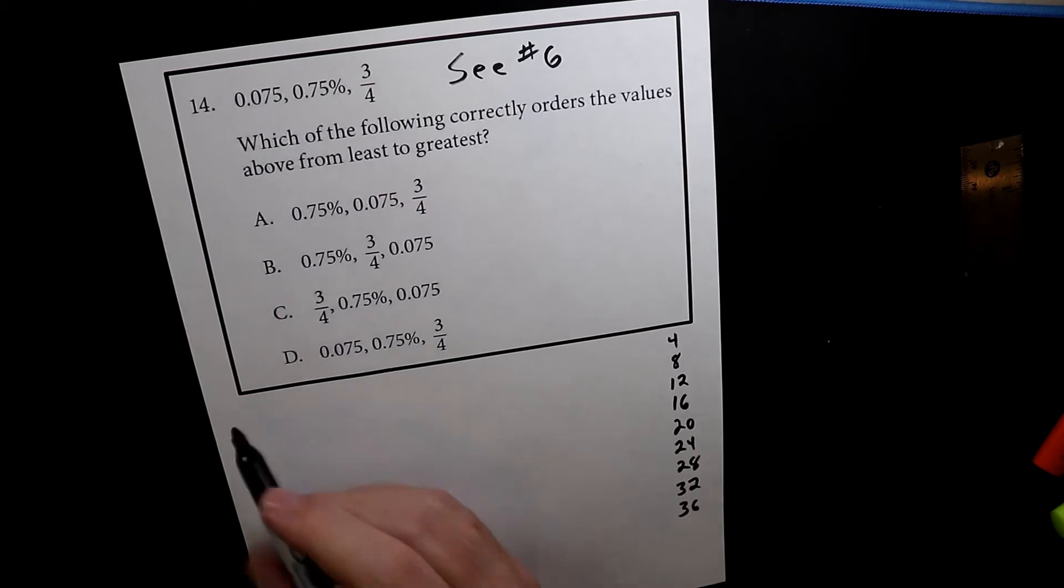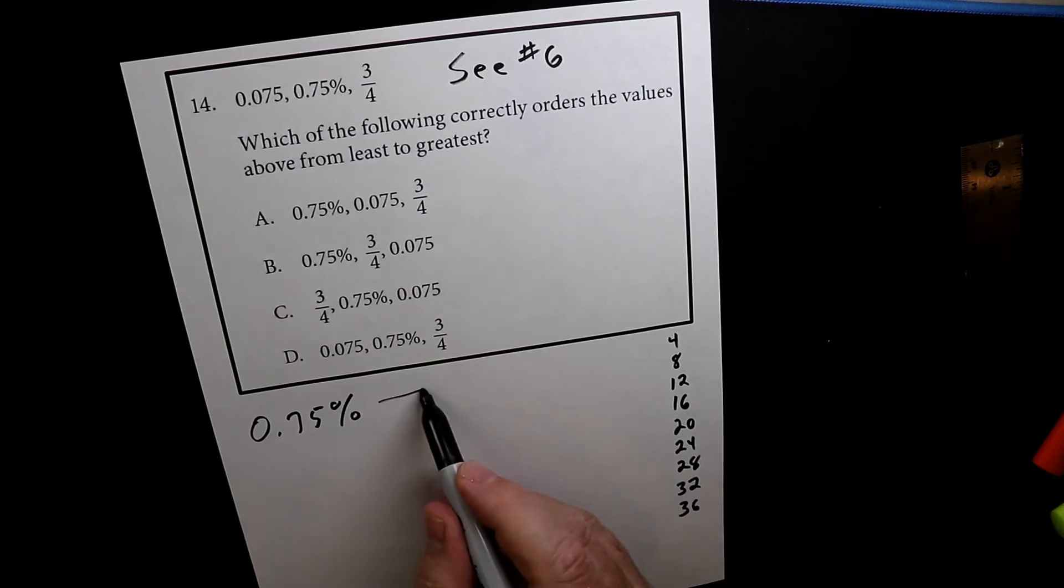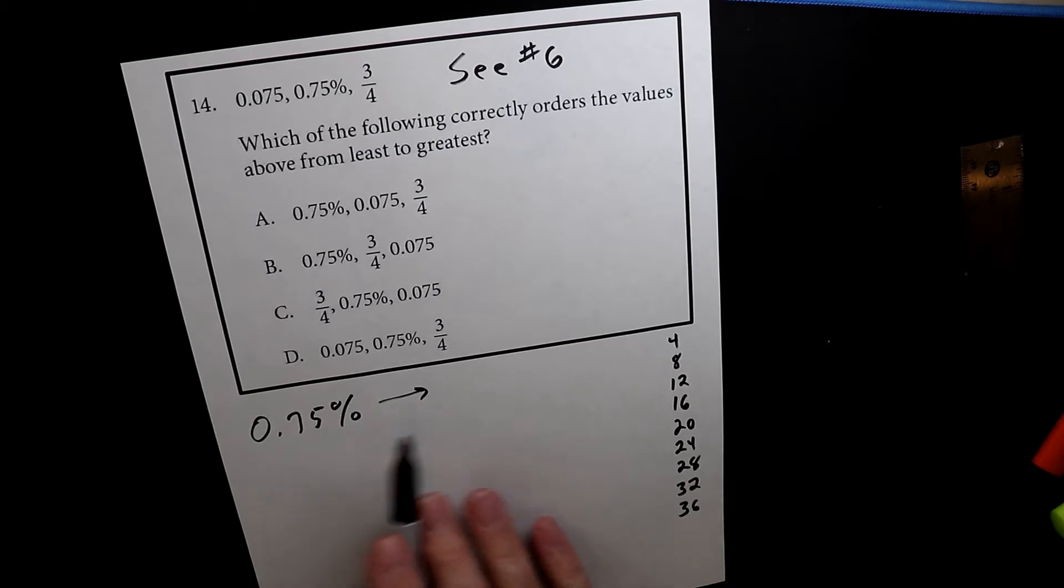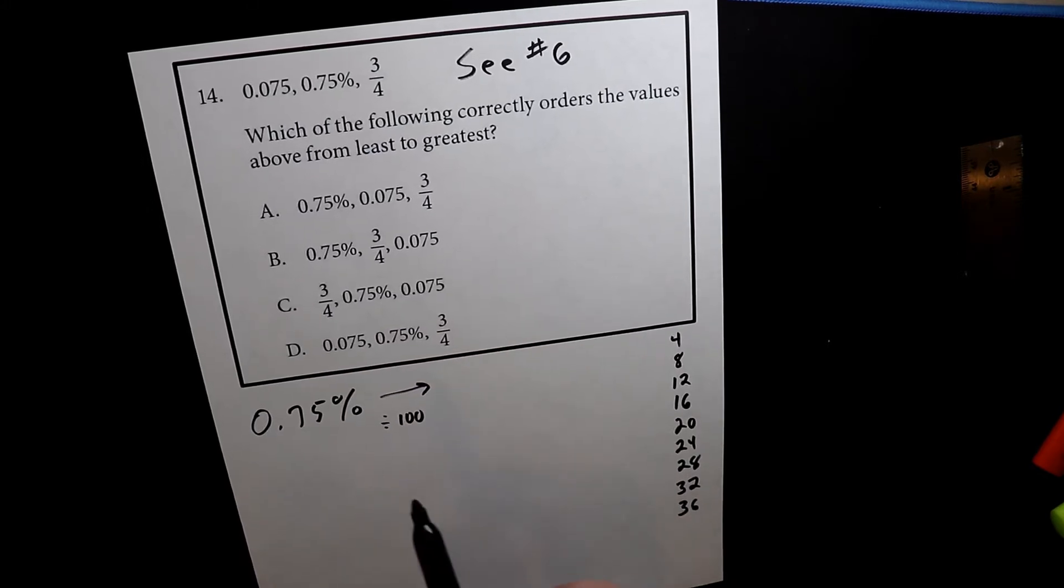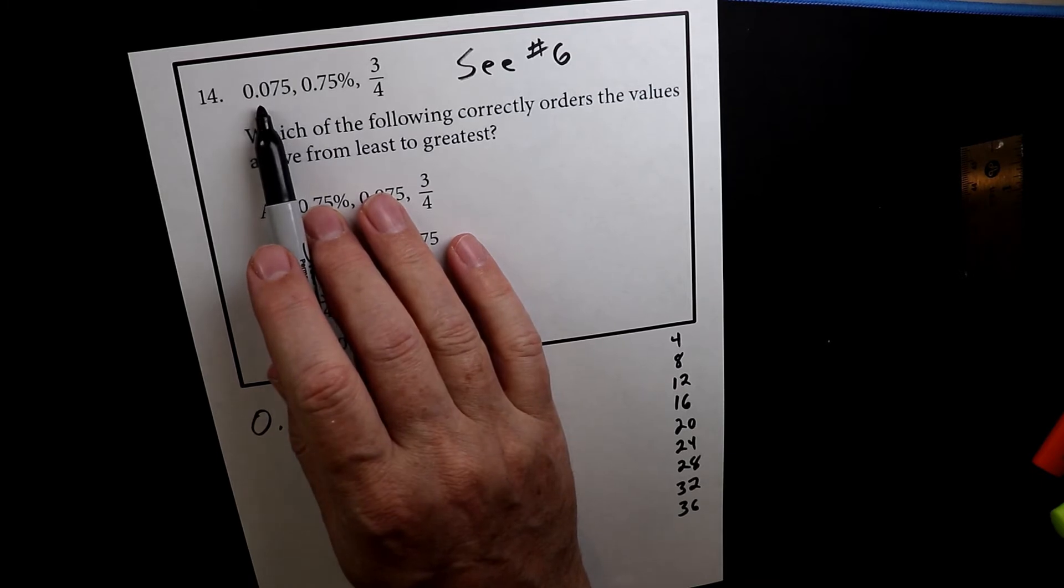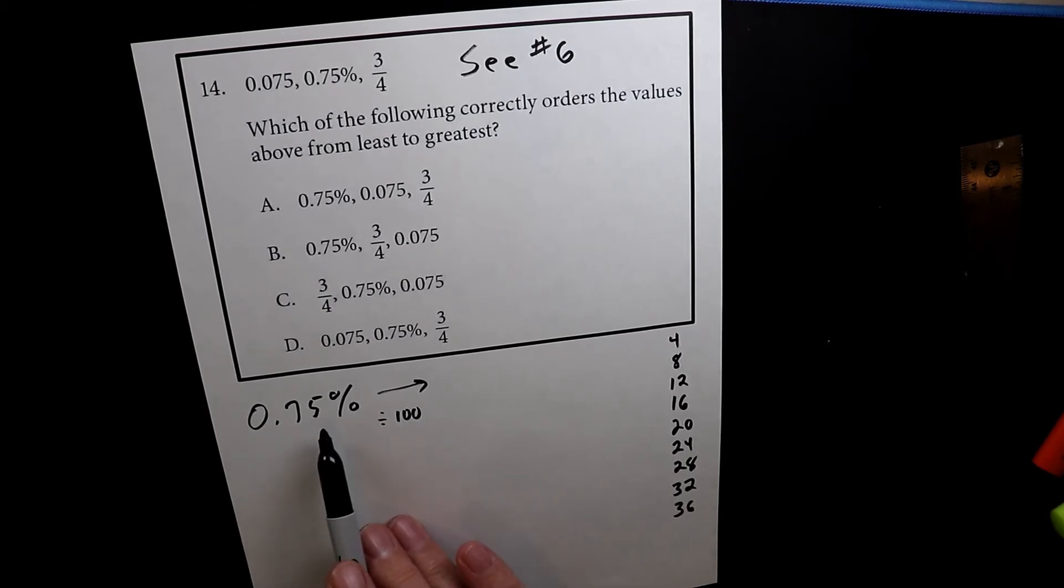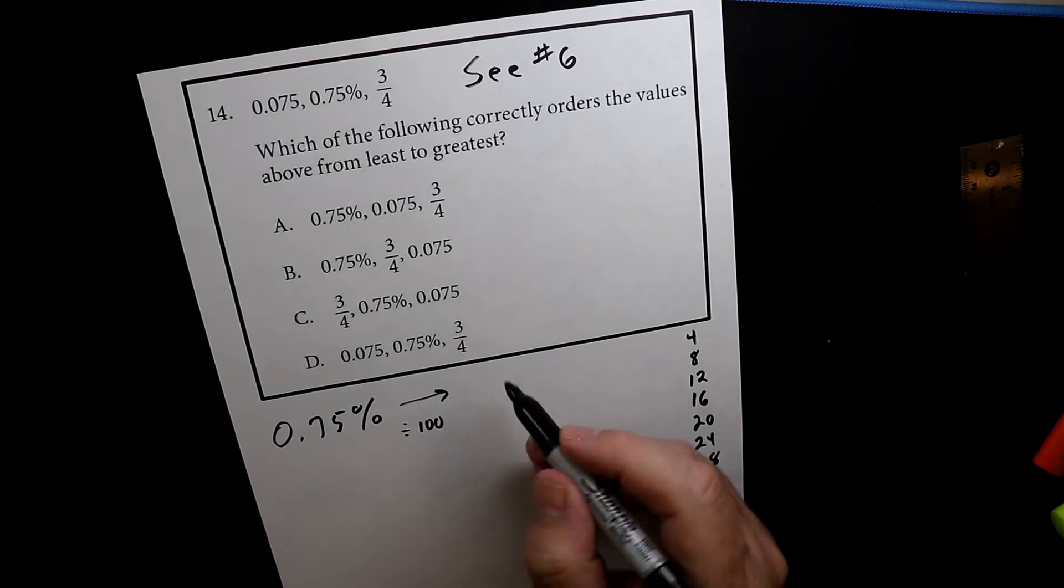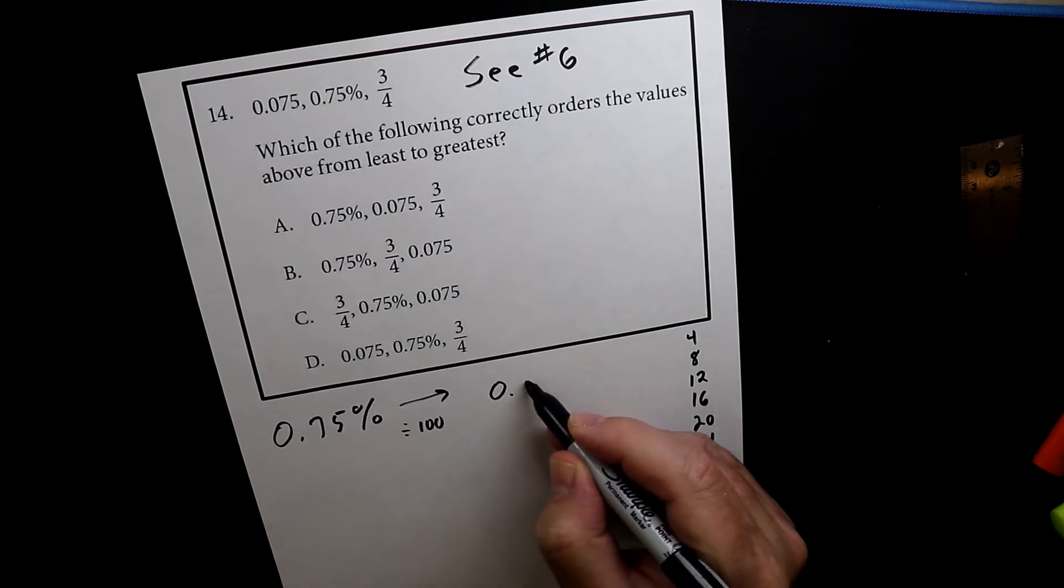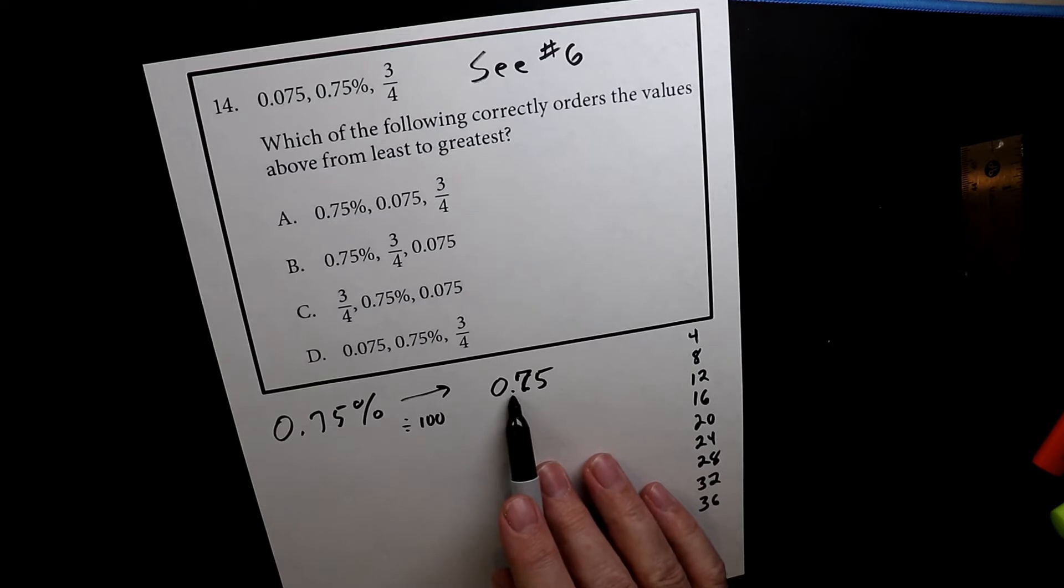So the next one I want to look at is 0.75%. Now to convert a percentage into a decimal, we're going to divide by 100. Now if you had a decimal and you wanted to convert it into a percentage, you would multiply by 100. But we don't want to do that. We're converting a percentage into a decimal. So we have to divide by 100 because the opposite of multiplication is division. So to do that, I'm going to write the numbers here. Now if we were to multiply, we would go this way. We'd move it to the right. But since we're dividing, we're moving the decimal to the left.